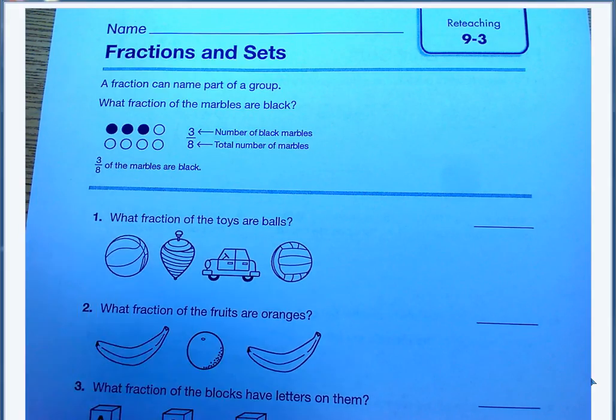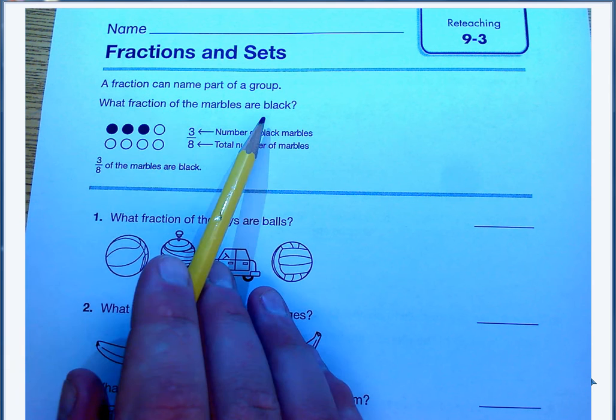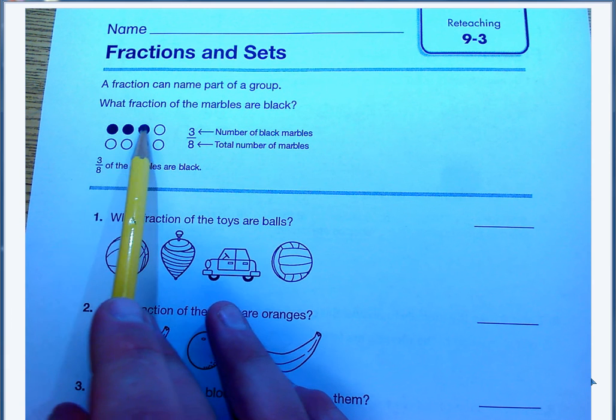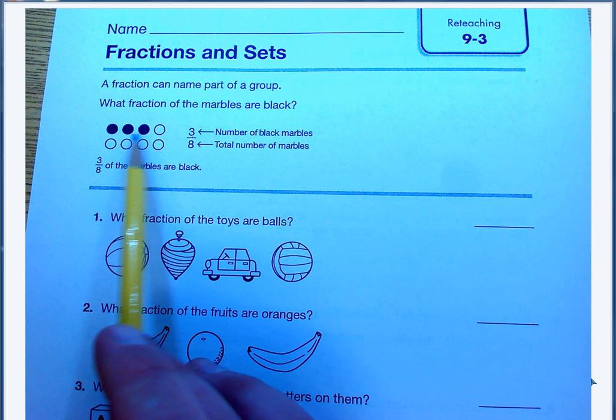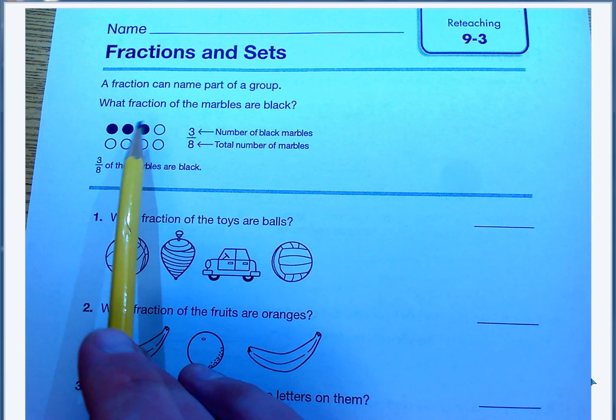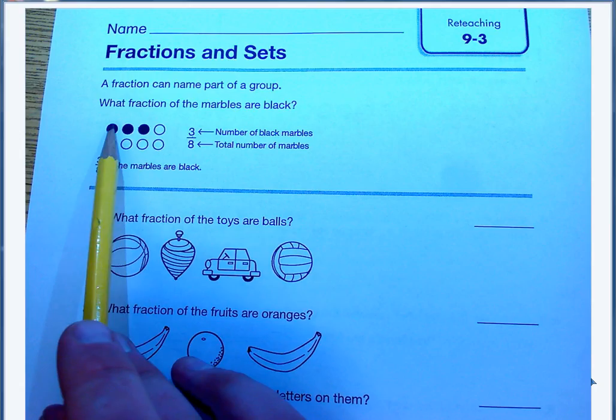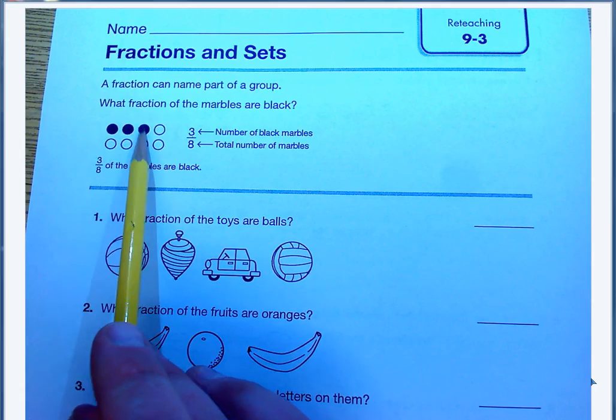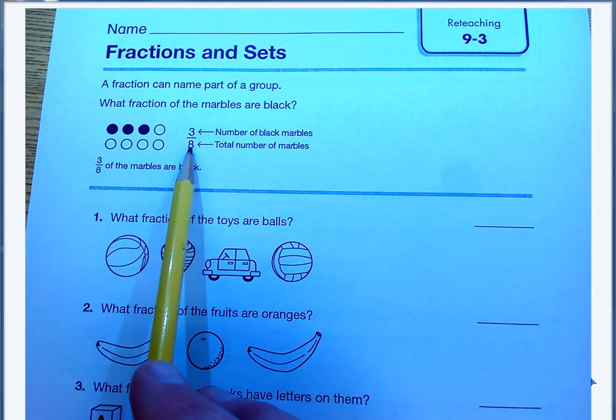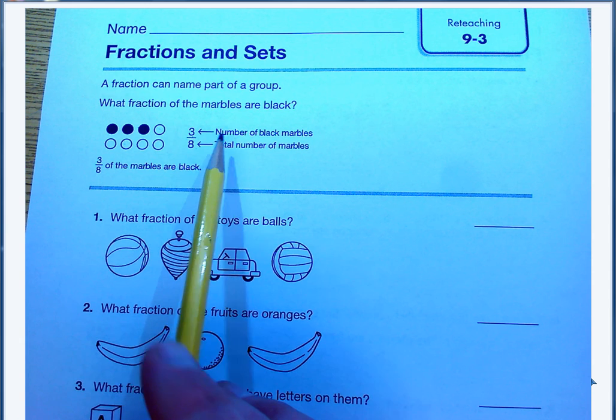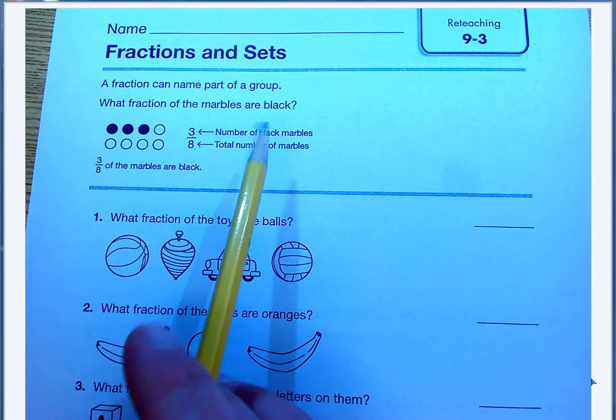What fraction of the marbles are black? We can see that we have three black marbles, and that's going to be our numerator, the number of black marbles. Then we need to figure out the total number. 1, 2, 3, 4, 5, 6, 7, 8 is our denominator because I have 8 total marbles. So 3 out of 8 of my marbles are black.